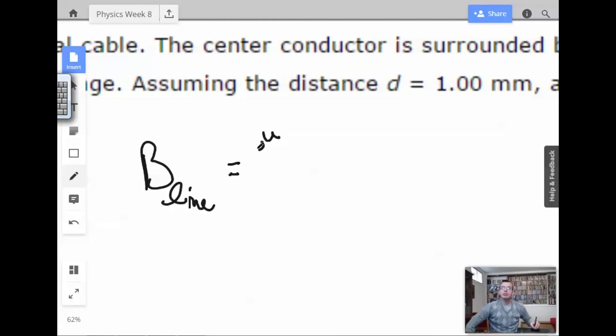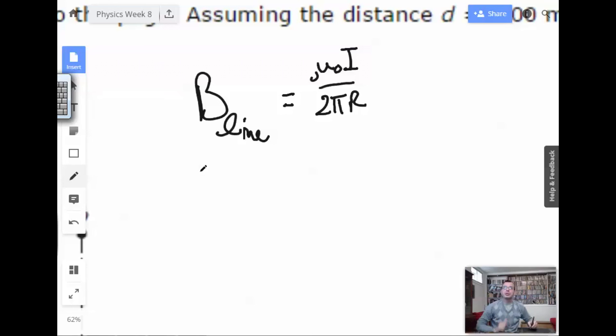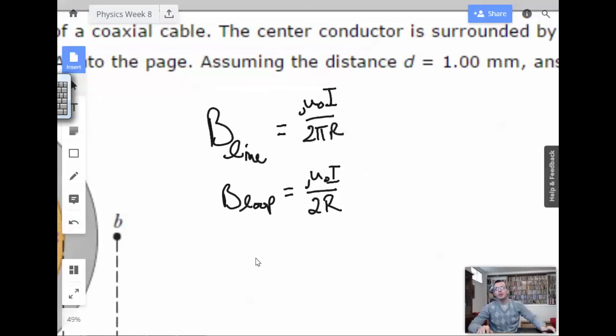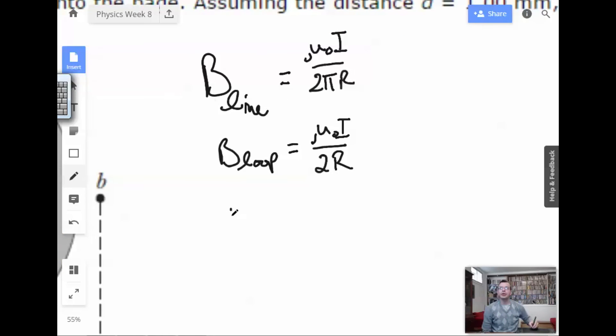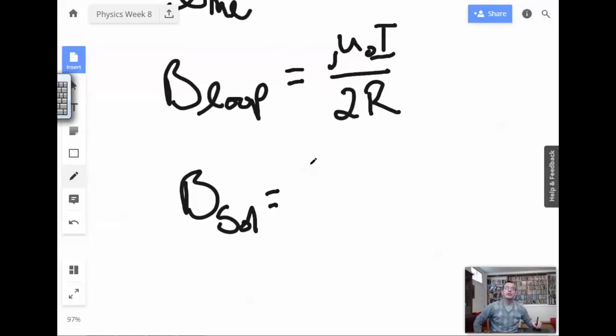Equals μ₀I over 2πr. The other one is for a loop, which is μ₀I over 2r. And then we have magnetic field from a solenoid equals μ₀I number of turns over length.